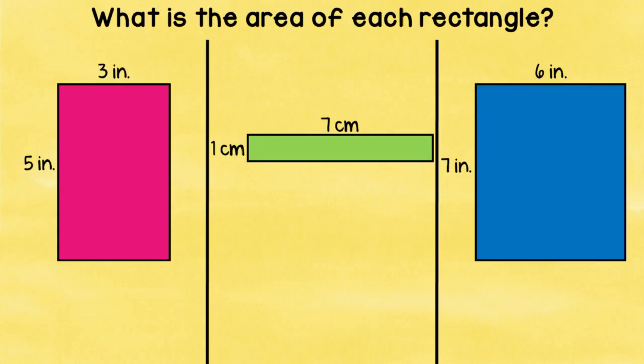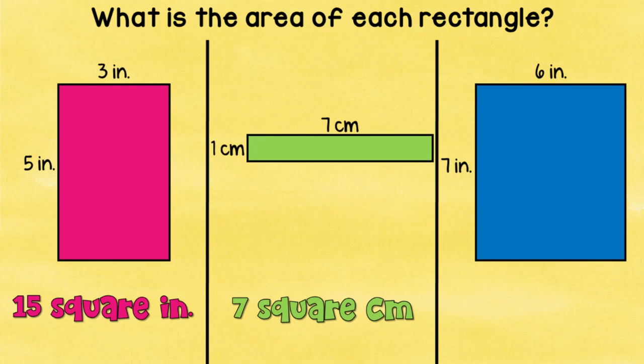So let's take a look at these three rectangles. The pink rectangle is a three by five rectangle. So if we take three times five, the area would be 15 square inches. Good job, third grade. Now take a look at the green one. We have seven centimeters and one centimeter. Do you remember the identity property of multiplication? Any number times one equals itself. So seven times one, what would the area for that be? Yes, seven square centimeters. And then the last one, we have a six by seven rectangle. So six inches times seven inches equals 42 square inches. How do you feel about that? Do you think you did well? I bet you did.